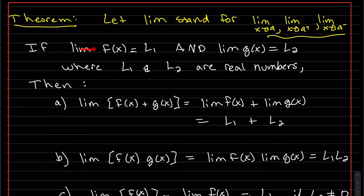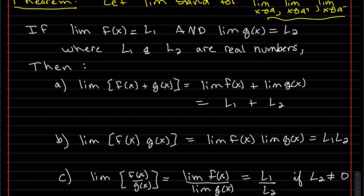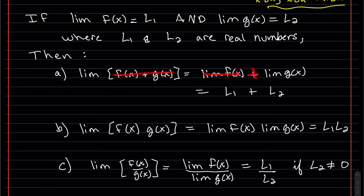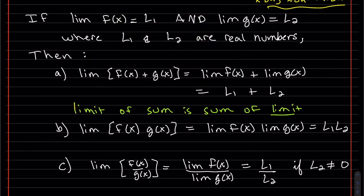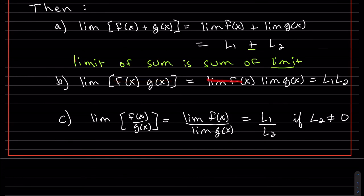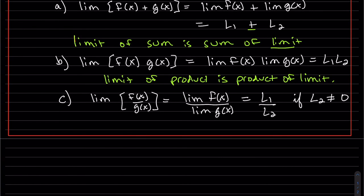This theorem says: if each of these limits exists, meaning L1 and L2 are real numbers — and real numbers cannot be infinity — then the limit of a sum is the sum of the limits. It equals L1 plus L2; the limit gets distributed, as long as each of those limits exist. We also have the limit of a product is the product of the limits. And last but not least, the limit of a quotient equals the quotient of the limits, as long as the denominator is not 0, because if that denominator is 0, the limit is undefined.